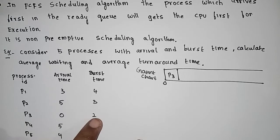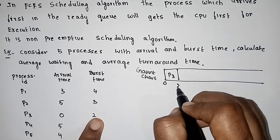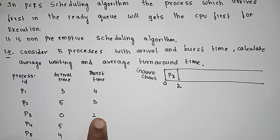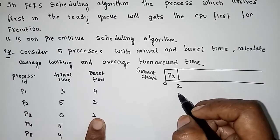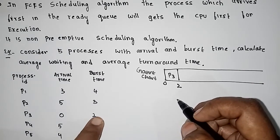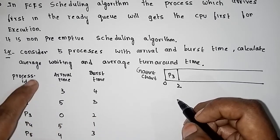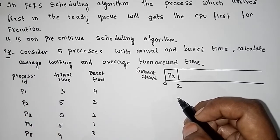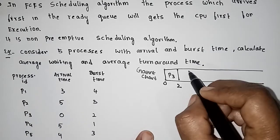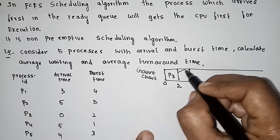P3 has a burst time of 2 units. So P3 completes execution of the CPU and is released. Now the next arrival time is at 3, so 2 to 3 is idle time.